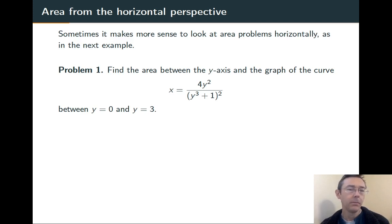There are entire genres of problems where drawing vertical rectangles between graphs and then using the integral to add up the areas of all those rectangles just doesn't work very well. Here's a pretty typical example. I want to find the area between the y-axis and the graph of this curve x equals 4y² over (y³ + 1)² between y equals zero and y equals three.